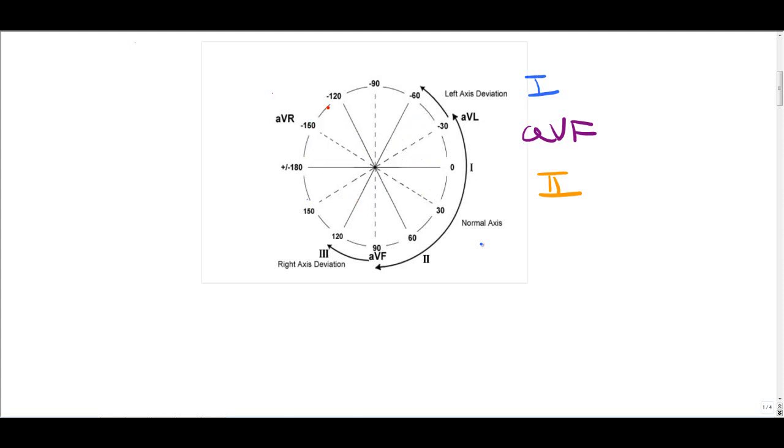is positive where the orange covers and negative where the red encompasses. Lead 2 is really important because it helps us determine the difference between left axis deviation and normal axis. So outlined in blue here is where normal axis lies from negative 30 to positive 90 degrees. Lead 2 will help you determine whether an axis truly is left axis deviation or which lies between 0 to negative 30.